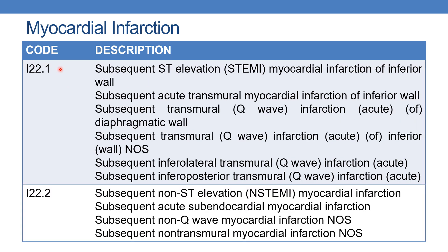The next is I22.1 — subsequent ST elevation myocardial infarction of inferior wall. Synonymous terms include: subsequent acute transmural myocardial infarction of inferior wall, subsequent transmural infarction of diaphragmatic wall, subsequent transmural infarction of inferior wall NOS, subsequent inferolateral transmural infarction, and subsequent inferoposterior transmural infarction. Code I22.1.